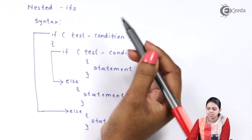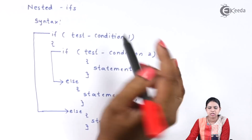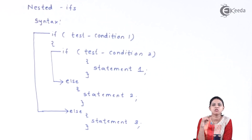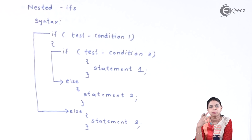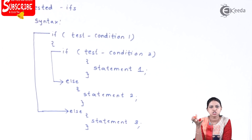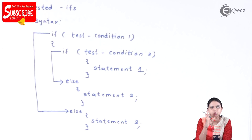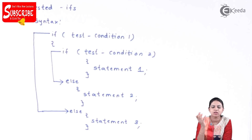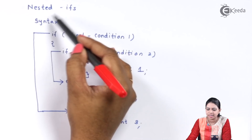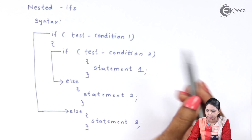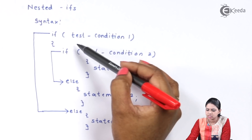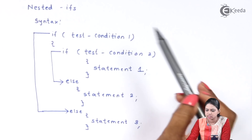This is the syntax of nested if-else. Basically, when we use nested if-else, we check more than one condition at a time. At that time, we make use of nested if-else or else-if ladder. So we will first see the syntax of nested ifs.